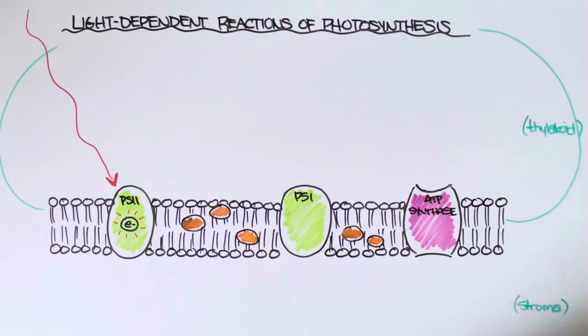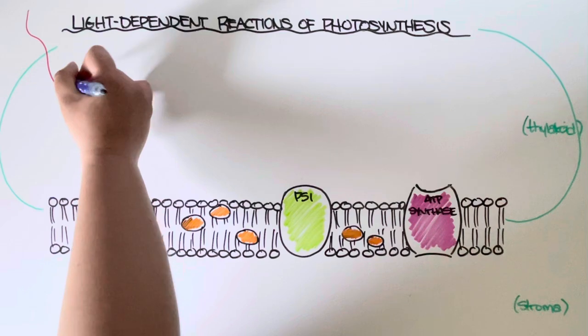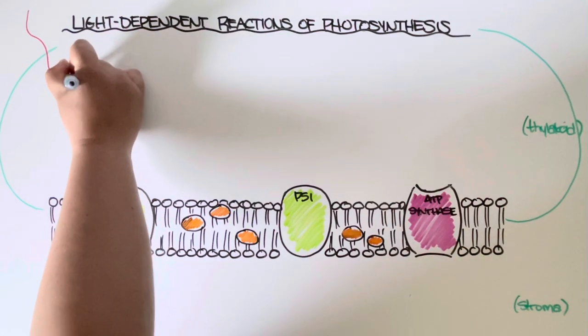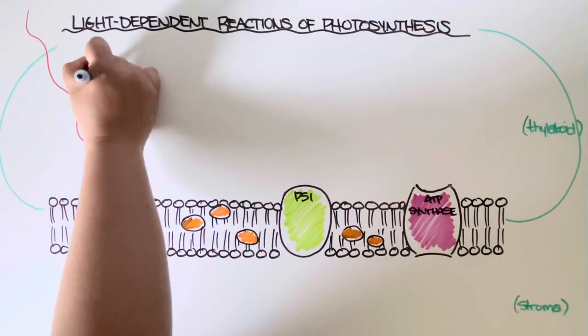This process, since it involves energy from the sun, is called photoexcitation. So this is step number one in the light dependent reactions.